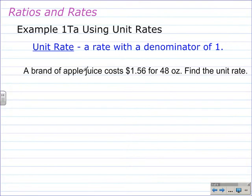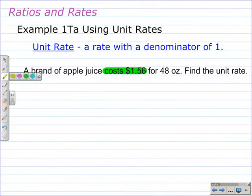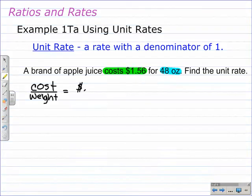We start off with a rate in this problem, comparing two units of measure: how much something costs and how much we're going to get. We need to write a rate that compares the cost to how much we're going to get. The rate we're going to start with is cost over weight. Typically when we refer to things, we want cost in the numerator and weight in the denominator. In this case, for $1.56, we get 48 ounces of apple juice.